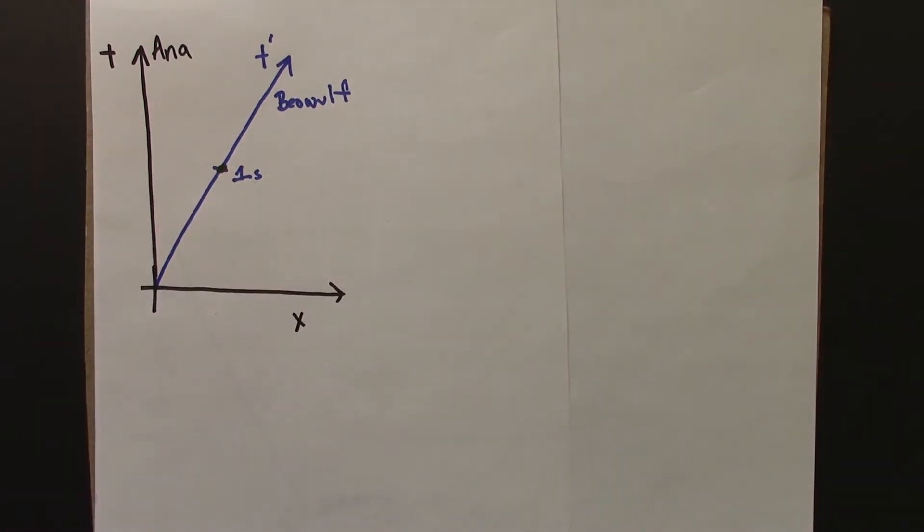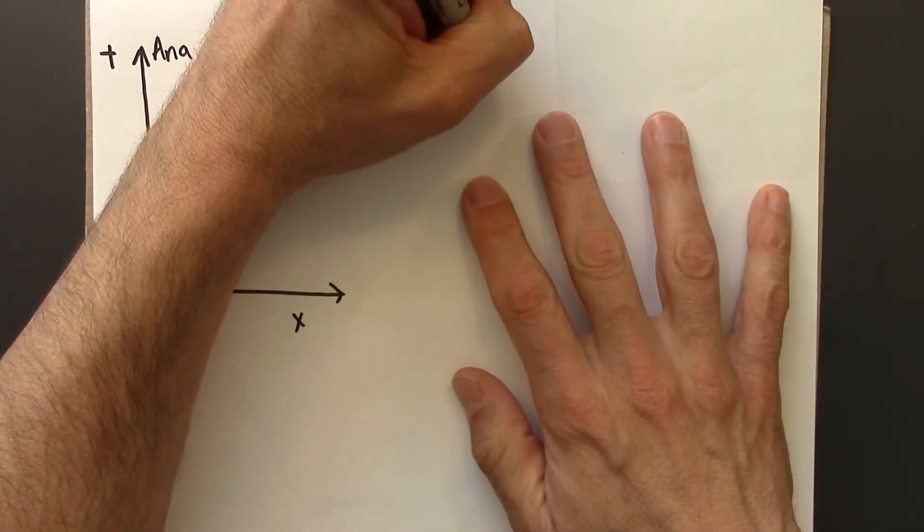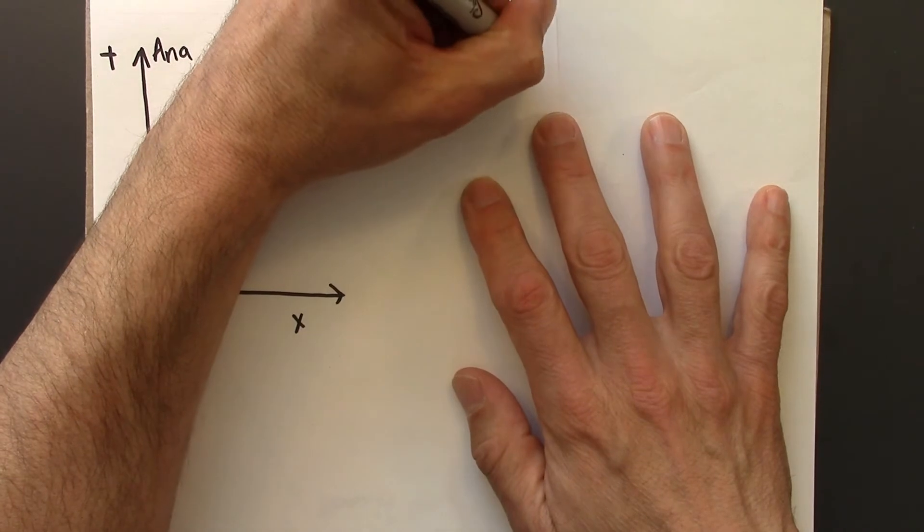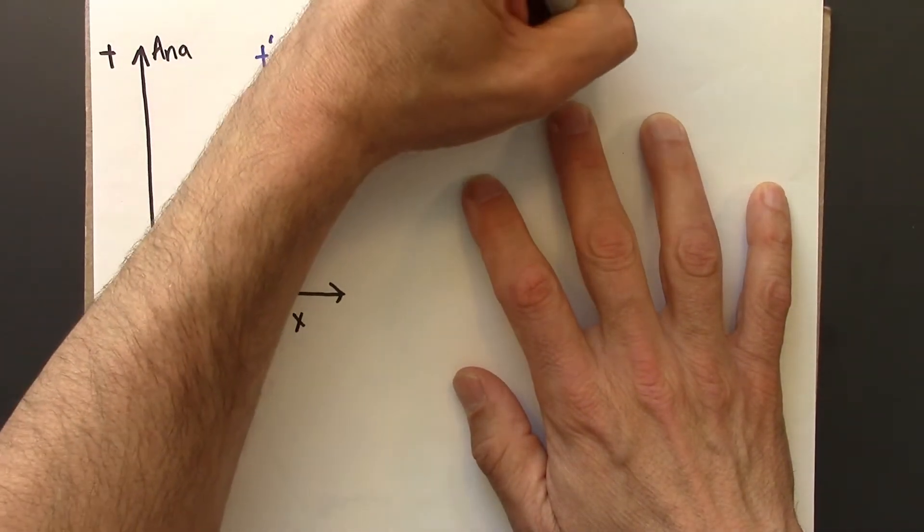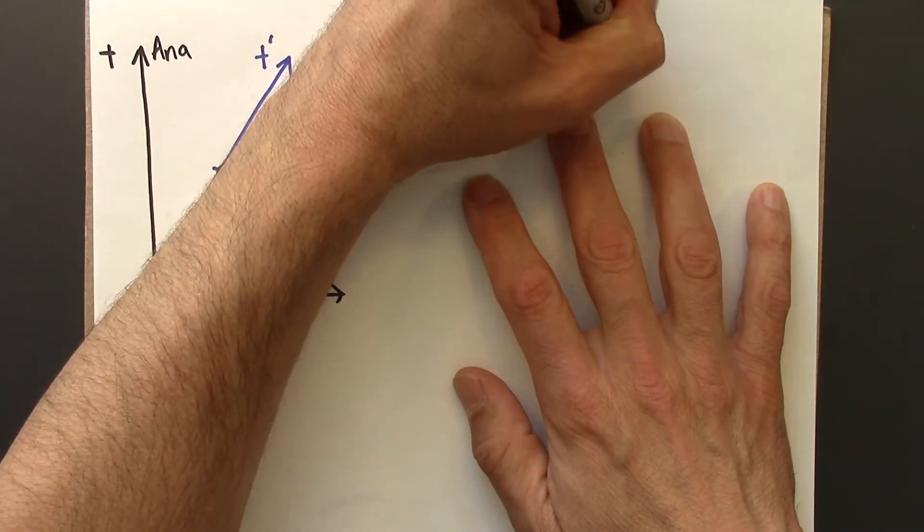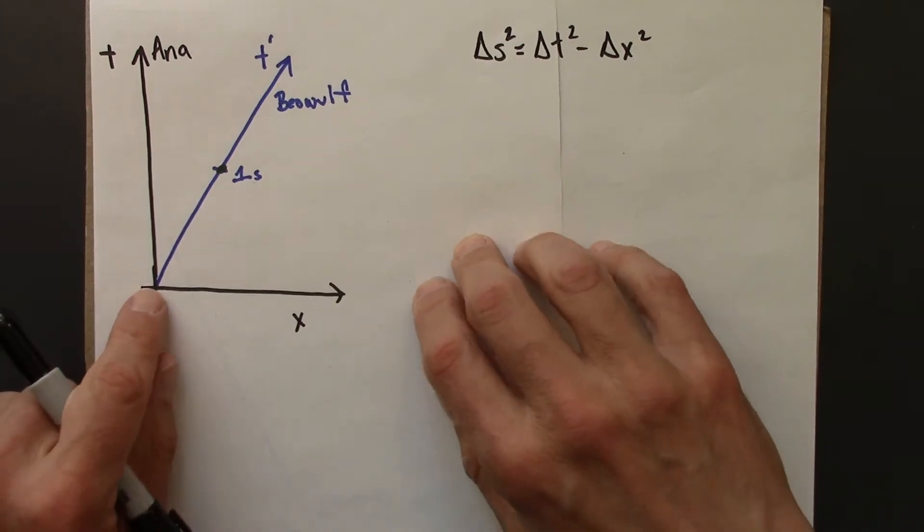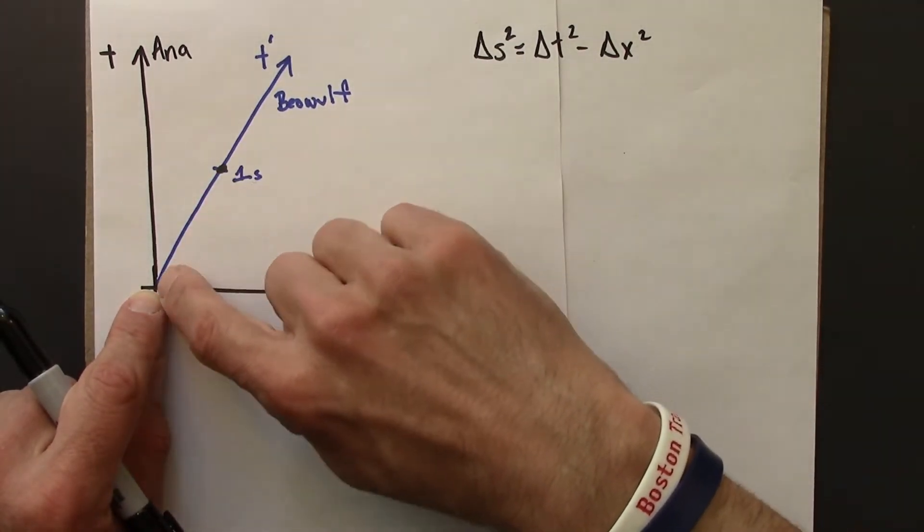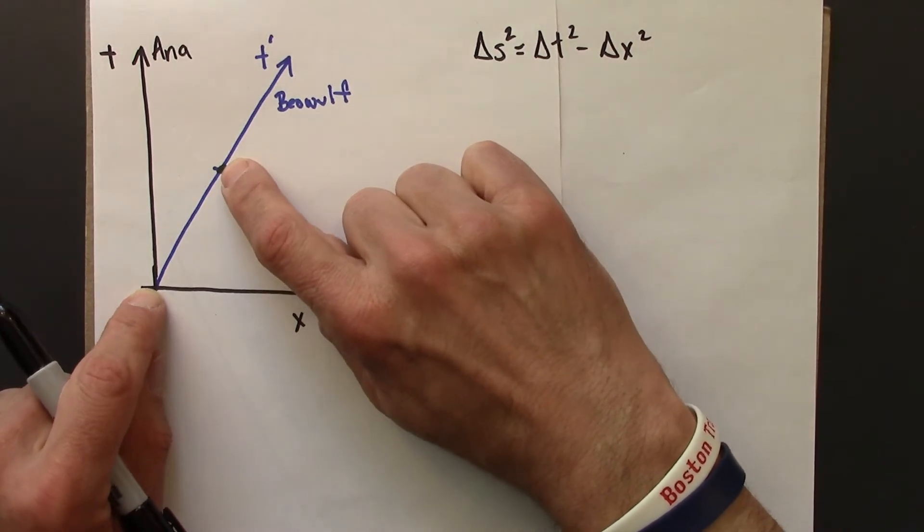what are the spacetime coordinates of this green event. So to do that, we'll use our old friend the metric equation. So I'll write that down. The spacetime interval squared is a time interval squared minus the space interval squared. And so this distance, this one second, as I argued in the previous video,